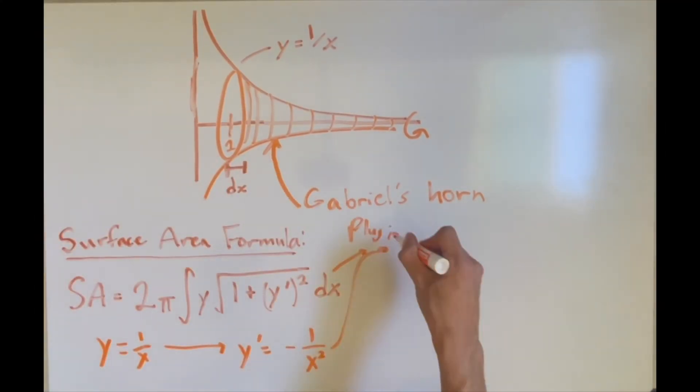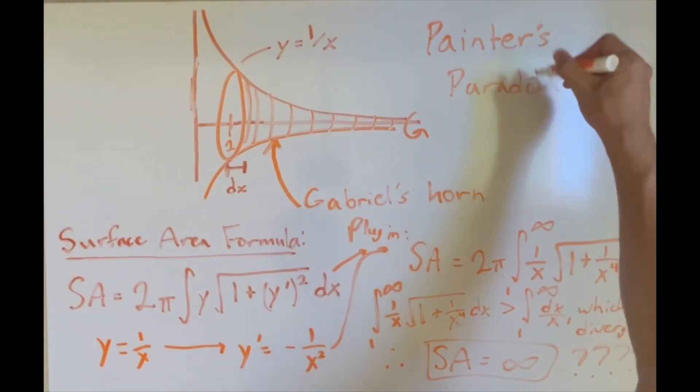Oh, and side note, if you do the math to find the outer surface area of Gabriel's horn, you can actually find that the surface area is infinite, meaning you can never completely paint over it, which is known as the painter's paradox.